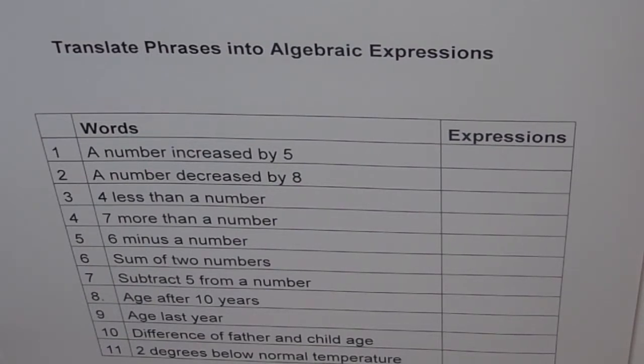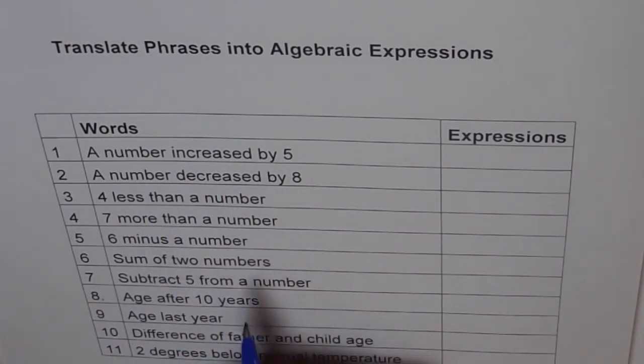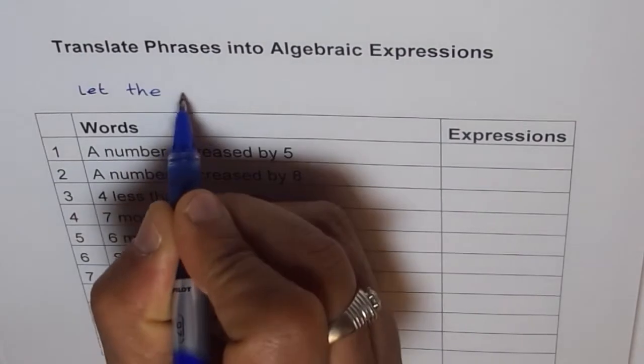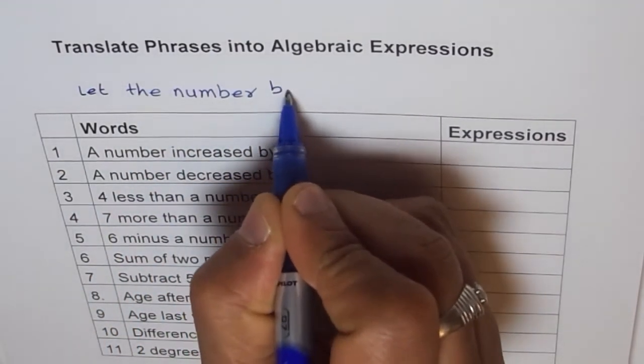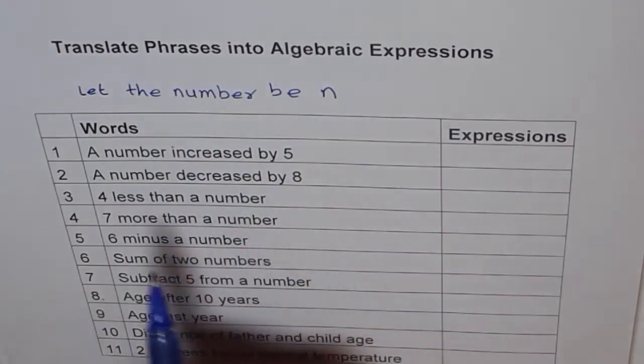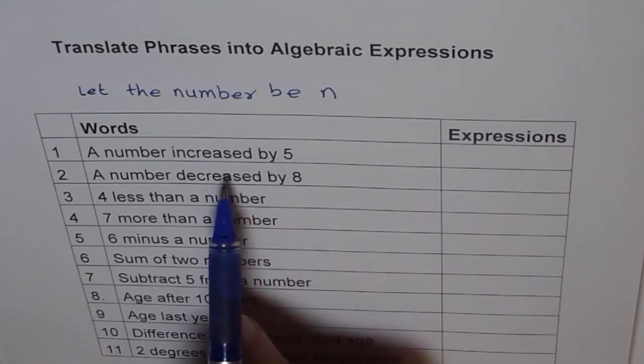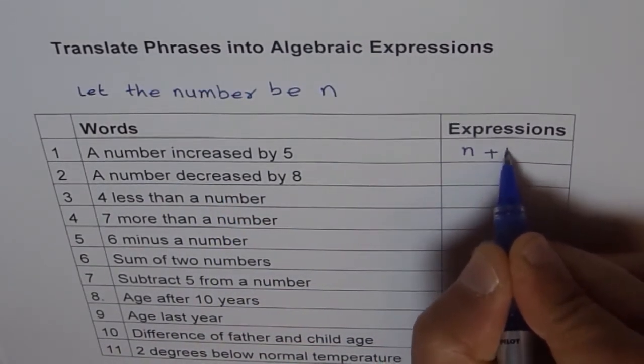So let's begin. Let's begin by saying first, a number increased by 5. So first of all, we should say for all of them, let the number be n. So always, whenever number comes, we will use n. A number increased by 5. Increased means more, right? So we will say number is n, so n plus 5.